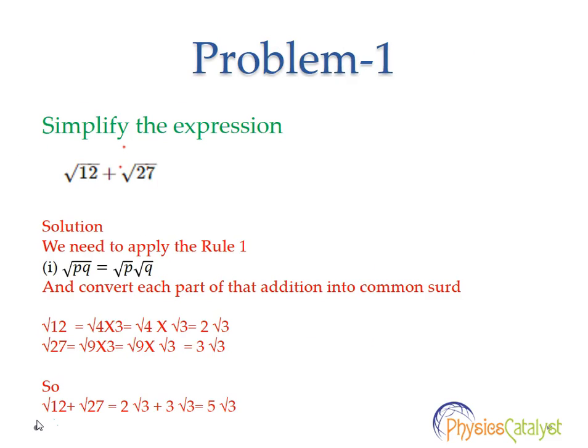Problem number 1: Simplify the expression root 12 plus root 27. Here we need to apply rule 1, which says that root PQ is equal to root P multiplied by root Q.